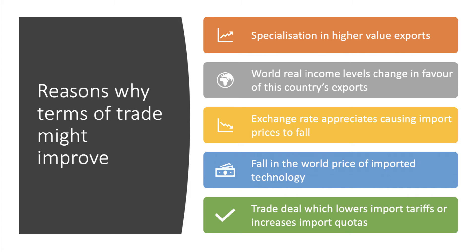The exchange rate going up in value — an appreciation — causes the cost of imports to go down. Looking at the formula, if import prices go down, the terms of trade are likely to improve. It could also be that the price of imported technology such as computers or fibre optics has fallen globally, costing you less. Or, linking it to protectionism, agreeing a trade deal that reduces import tariffs makes imports cheaper, and an increase in import quotas means increased supply of imports. These are reasons why the terms of trade might improve.